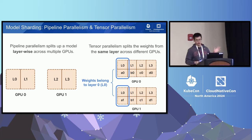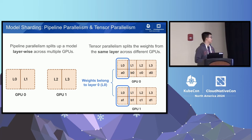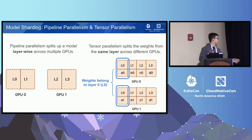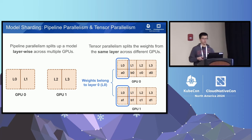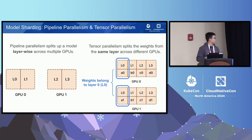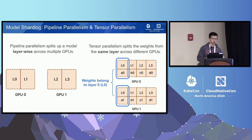Some background on model sharding strategies: pipeline parallelism splits the model based on layers — for example, layer 0 and layer 1 on GPU 0, and layer 2 and layer 3 on GPU 1. Tensor parallelism splits the weights within the same layer across multiple GPUs — for example, 50% of the weights for layer 0 on GPU 0, and the other 50% on GPU 1. These are the two popular model sharding strategies.